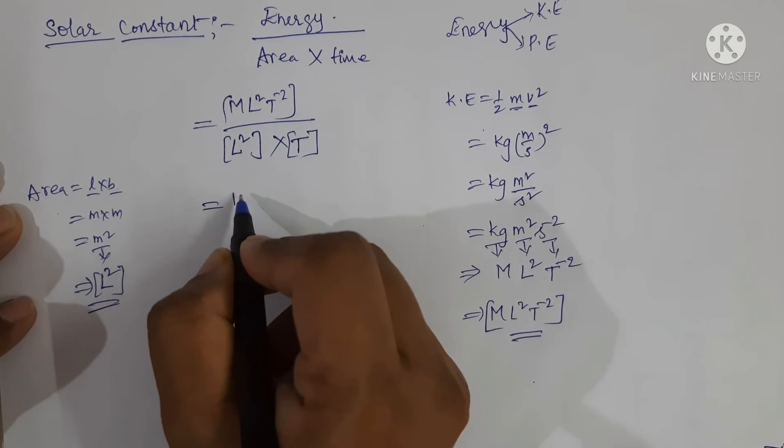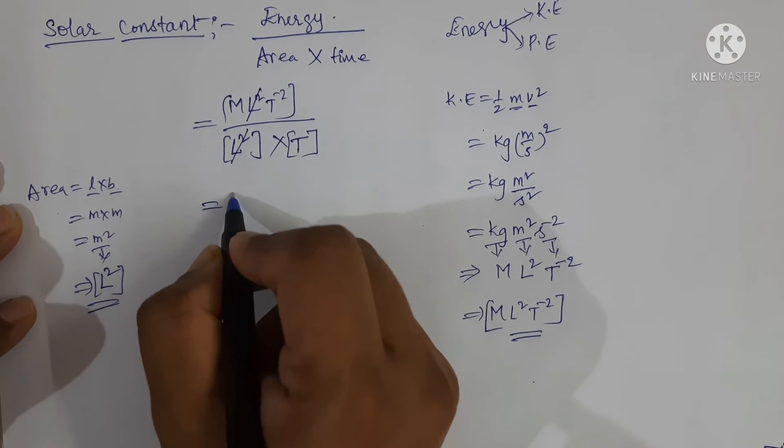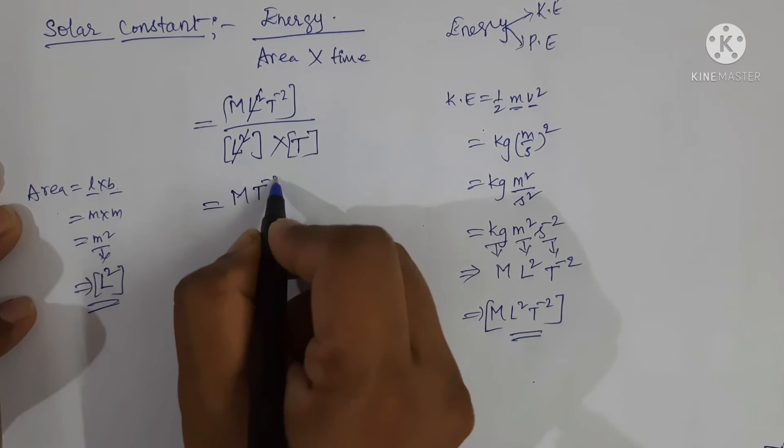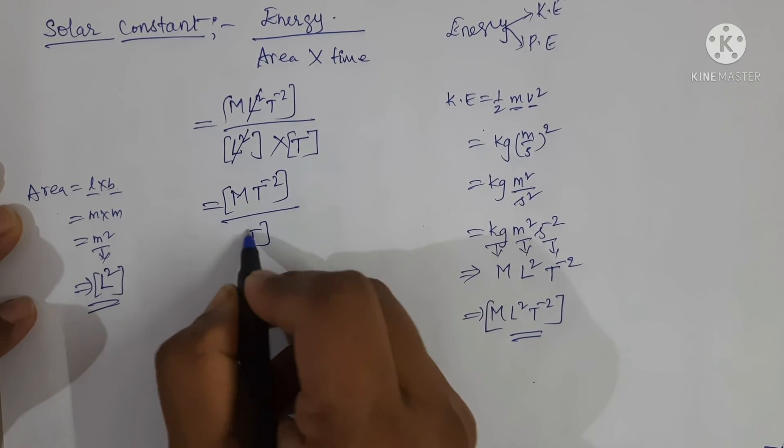Which is equal to... Here L square and L square will be cancelled. The remaining terms are M T power minus 2. And here upon T.